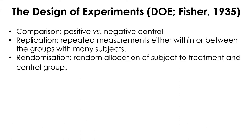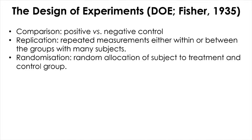Previously, we discussed ways of thinking about situations that are not experimental. What makes a study an experiment to say that something is causally related? For a study to be an experiment, there are several design components required to ensure validity and reliability. Among those components, we will talk about three of them: a need for a comparison group, replication, and random allocation.